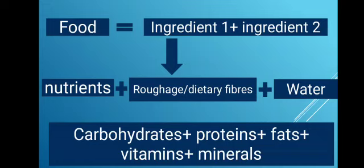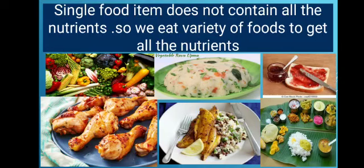And in nutrients, it consists of carbohydrates, protein, fats, vitamins and minerals. A single food item does not contain all the nutrients. So we need different varieties of food to get all the nutrients.